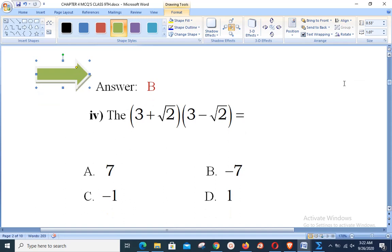Then the next one, number 4: 3 plus square root 2 multiply by 3 minus square root 2. It is of the form a plus b into a minus b. You may apply a square minus b square. That is equal to 3 square minus square root 2 square. Square of 3 is 9, whereas square root 2 squared remains 2, so 9 minus 2 will be 7 as the answer.